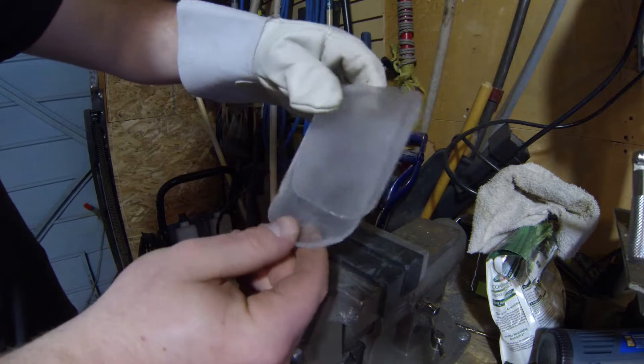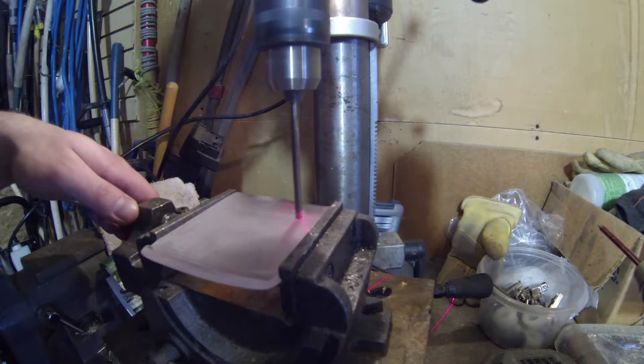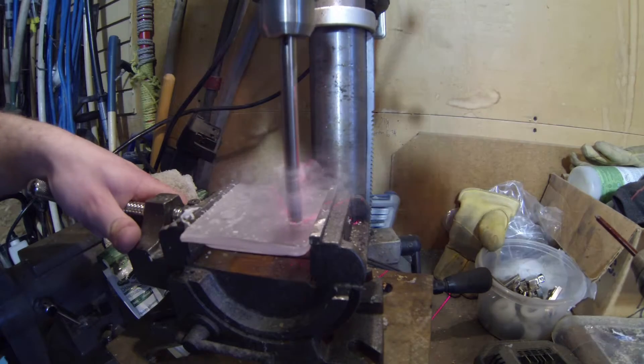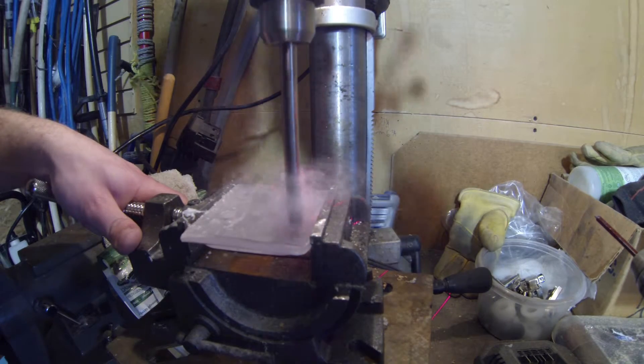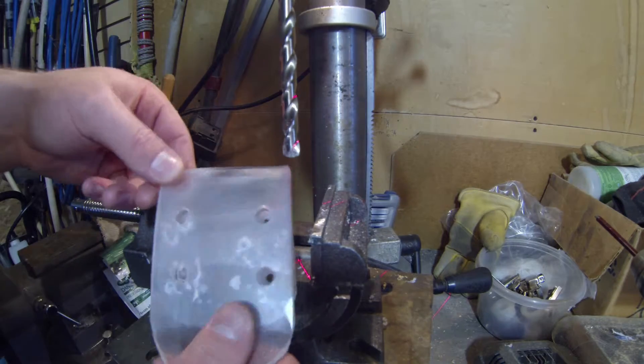Once you're happy with the shape, let it cool and take it over to the drill press. You want to drill 4 holes smaller than the head of the screw through both layers, and then 4 more larger than the head, just through the top layer and a bit on the bottom to countersink the screws. Once you're done with that, you can take everything inside for the next steps.